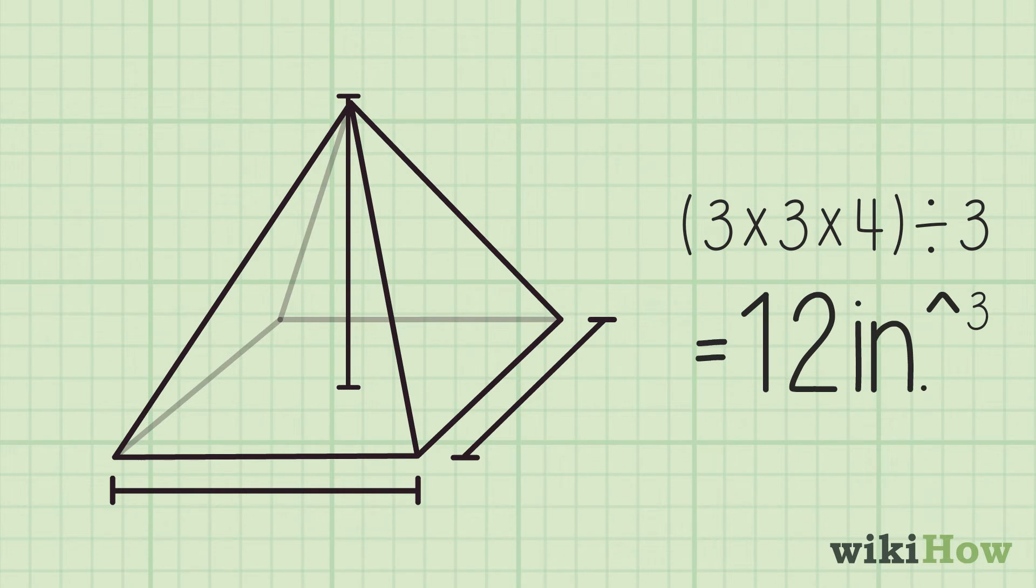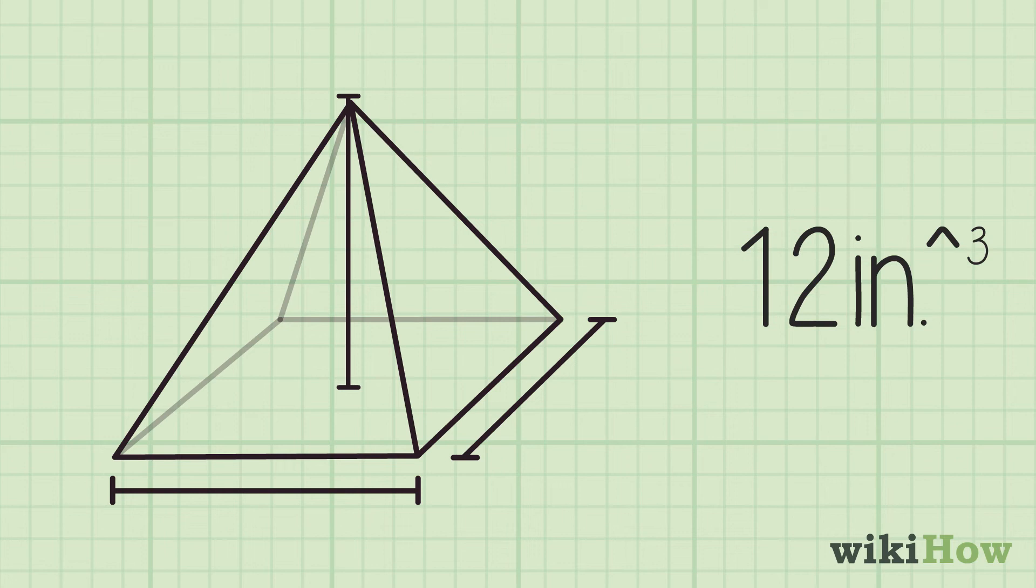Since you're describing the volume of a three-dimensional object, remember to write your answer in cubic units. In this case, the pyramid has a volume of 12 cubic inches.